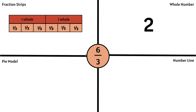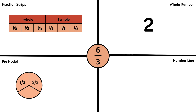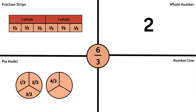Now let's use a pie model to represent 6 thirds. We need a pie with 3 equal parts because the denominator is 3. Let's count: 1 third, 2 thirds, 3 thirds — 3 thirds makes 1 whole pie. We need another pie, so let's keep adding a third: 4 thirds, 5 thirds, 6 thirds. 6 thirds makes 2 wholes.